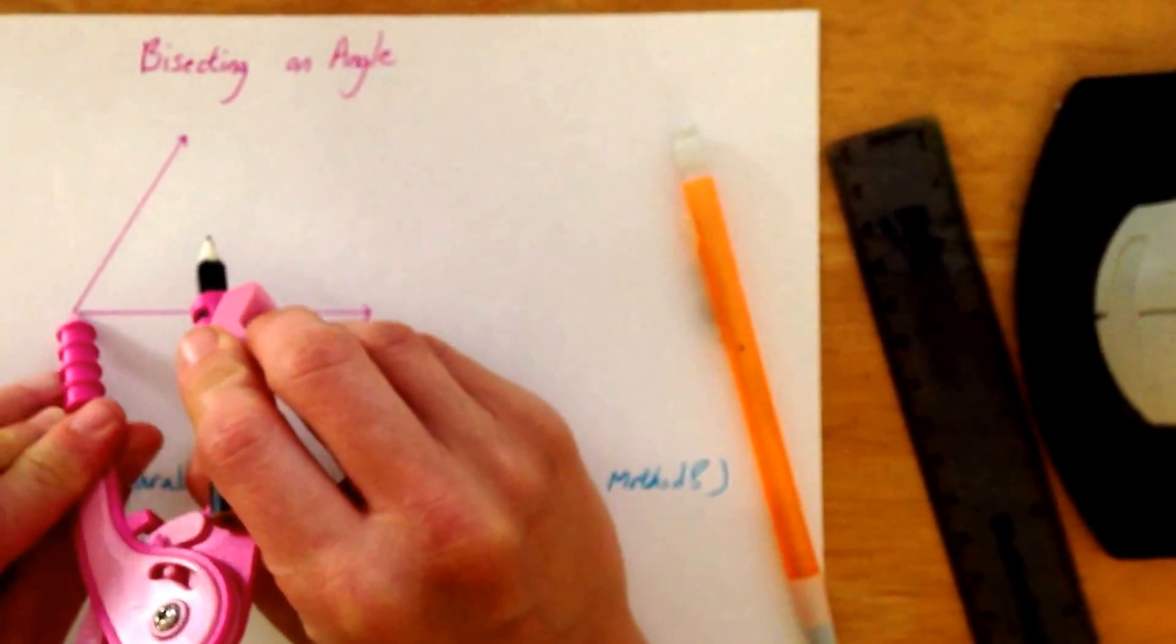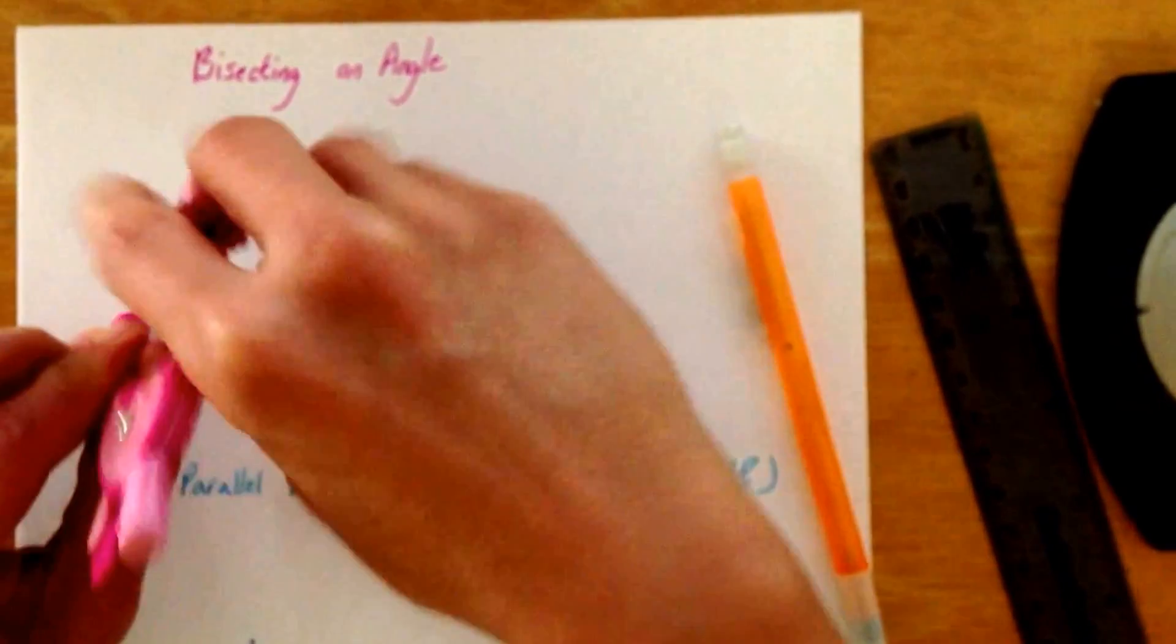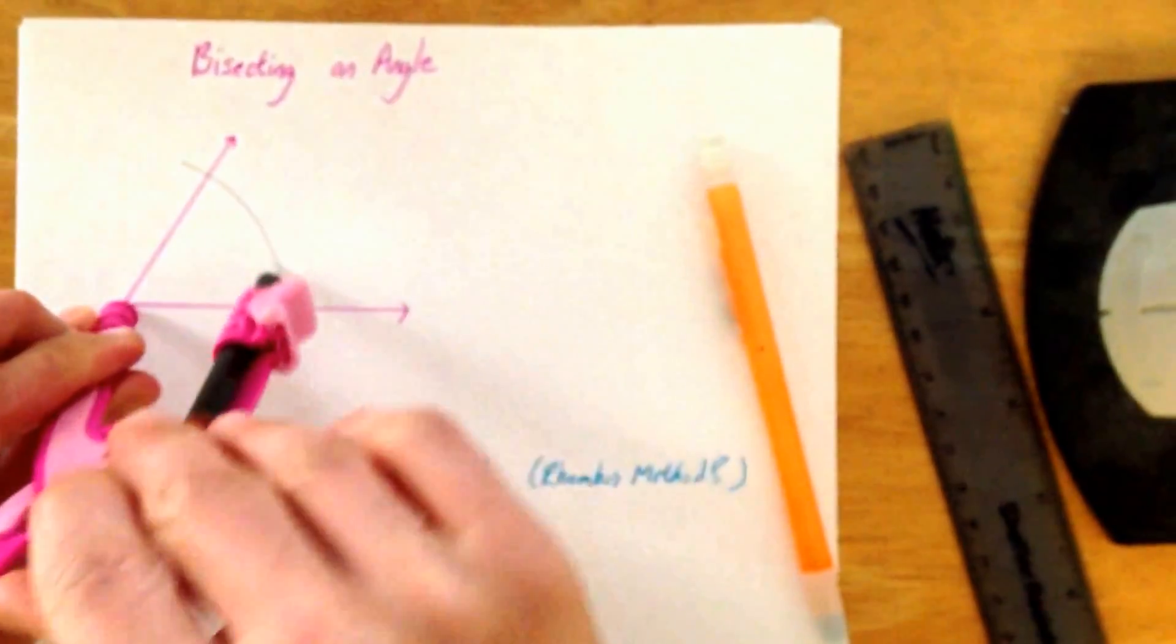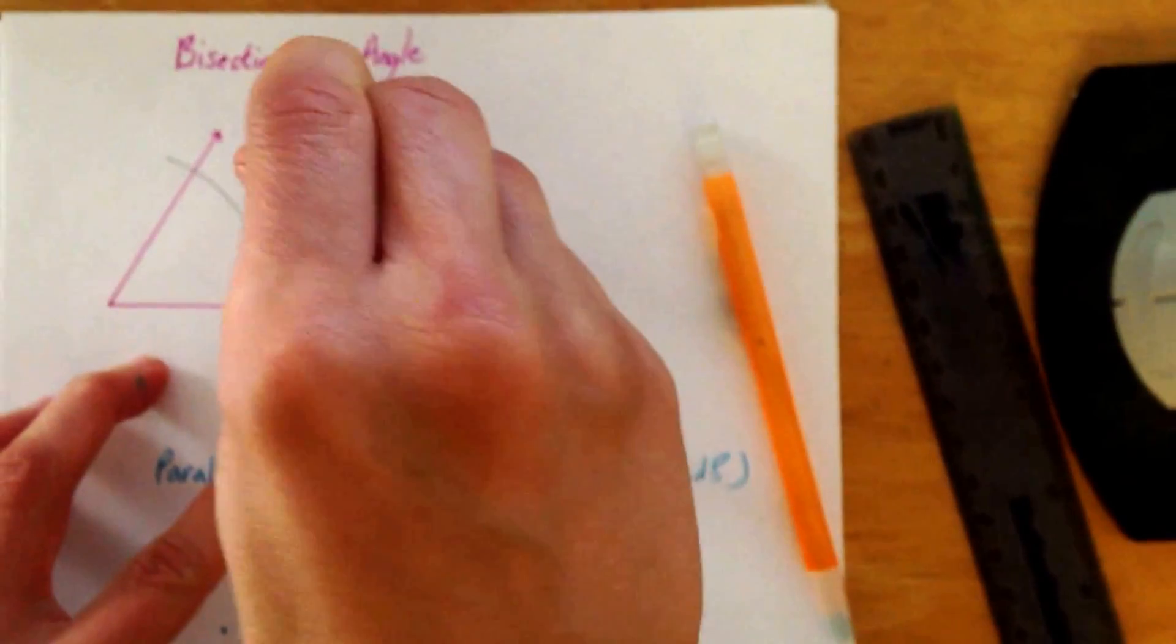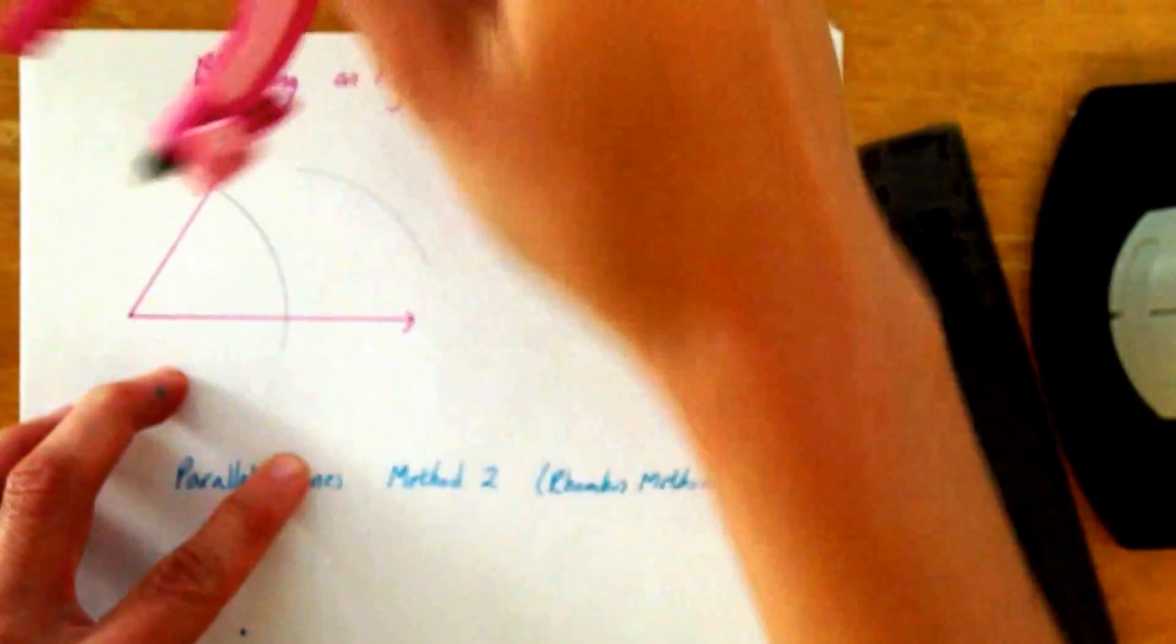Alright, to bisect our angle, we're going to open up our compass to any old length we want and draw an arc, and then from each of the endpoints that we just did, draw another arc,